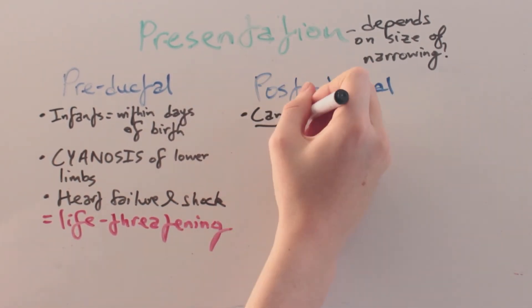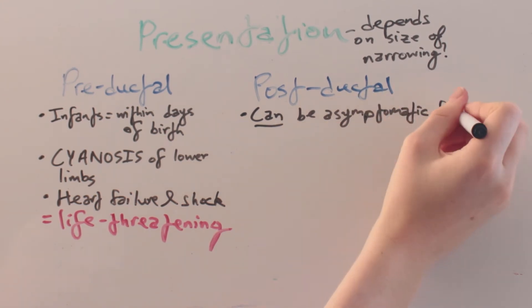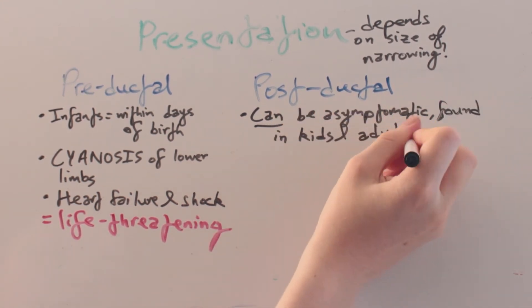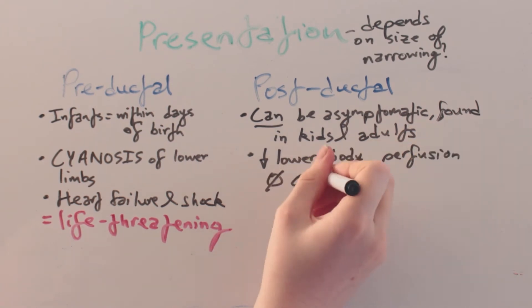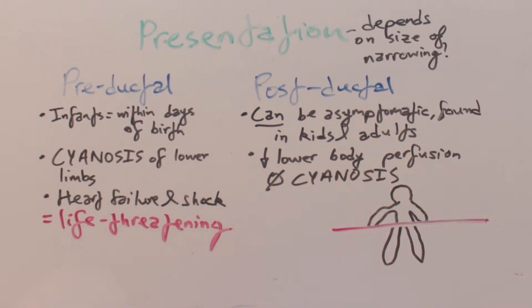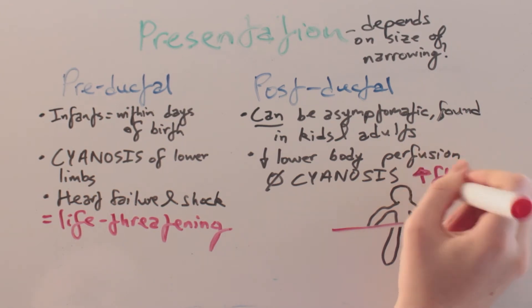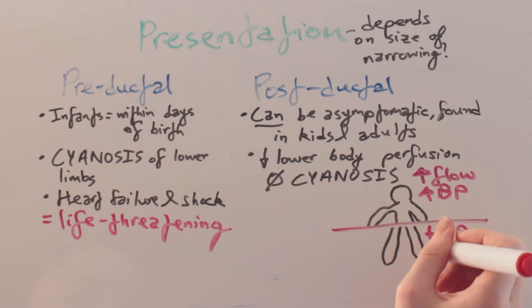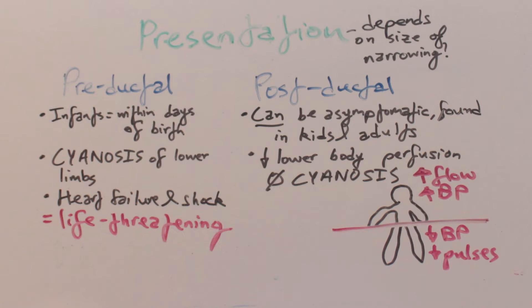Post-ductal coarctation can be asymptomatic and is found in kids and adults. There is reduced lower body perfusion yet no cyanosis. The upper body experiences increased blood flow resulting in hypertension, while the lower body has reduced flow, hypotension, and weak pulses. There may also be symptoms of claudication and cool peripheries due to this reduced flow.